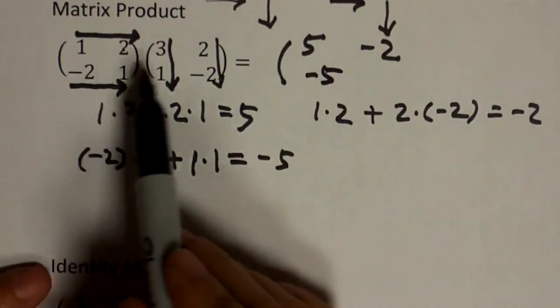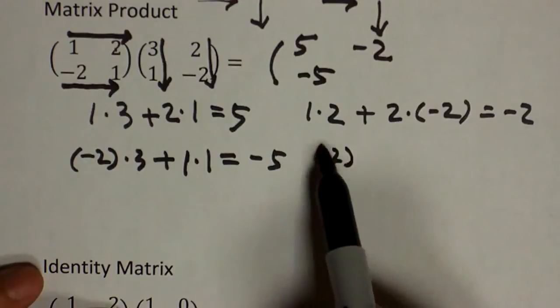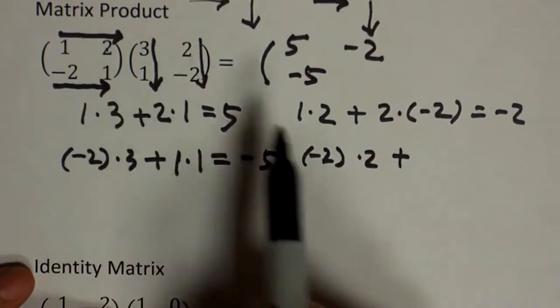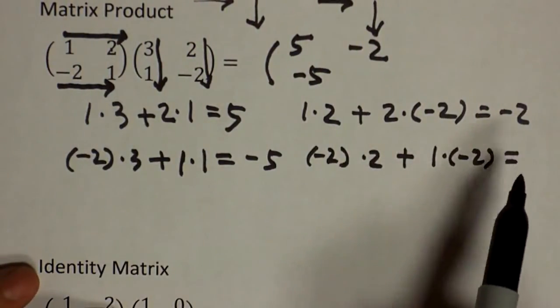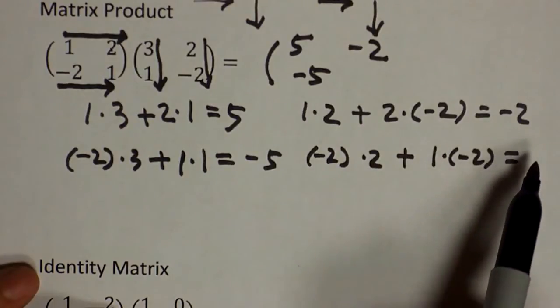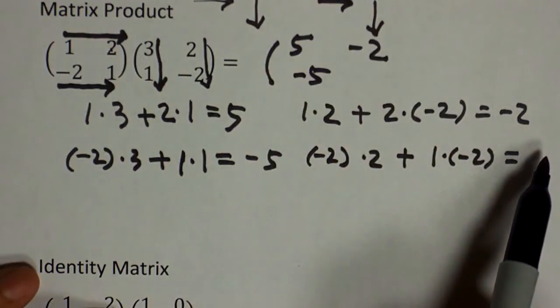Negative two times two. One times negative two. And that's negative six.